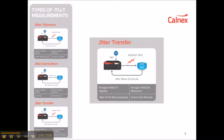Jitter transfer involves measuring the Jitter gain of a piece of network equipment. There's normally a calibration cycle in which a known level of Jitter is applied and then measured by the test equipment, and then the network equipment is inserted and the Jitter gain is measured.